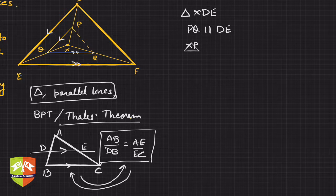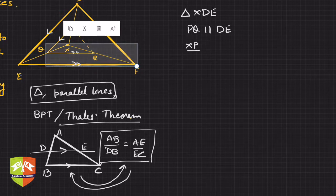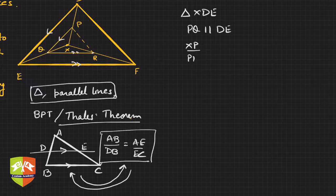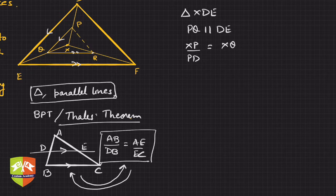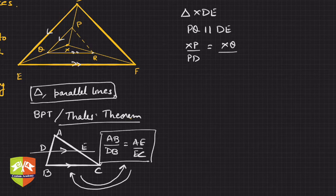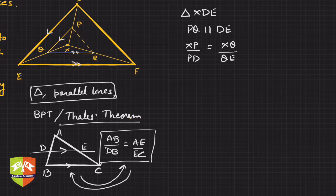So we can write XP upon PD. XP upon PD will be equal to XQ upon XQ upon QE.